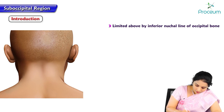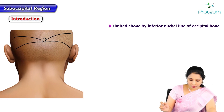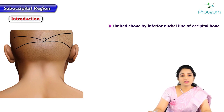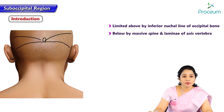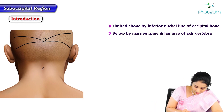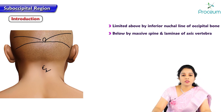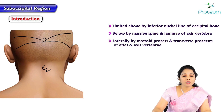Here is the external occipital protuberance, superior nuchal lines on each side, and inferior nuchal lines. Above it is limited by the inferior nuchal lines and below by the massive spine of lamina of the second cervical vertebra, that is the axis. Here would be C2 axis and laterally by the mastoid process.